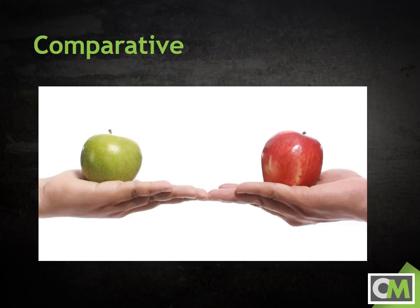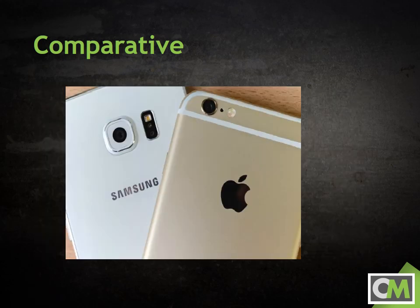Comparative organization is somewhat similar to pro-con, but it usually stresses the relative advantages of one idea over another. For example, a comparative speech might emphasize the benefits of homeschooling over sending children to public schools, or the relative strengths of Samsung phones versus iPhones. Because comparative organization typically favors one item over another, it is most useful for persuasive speeches.